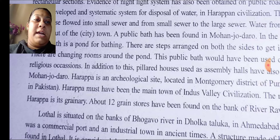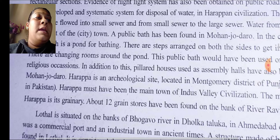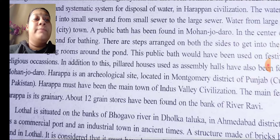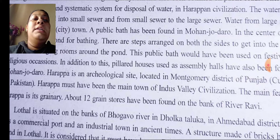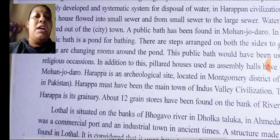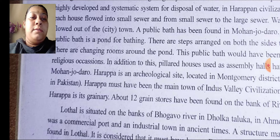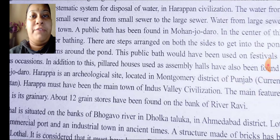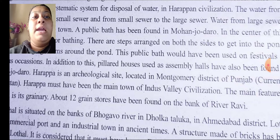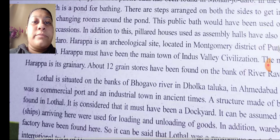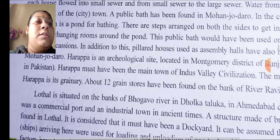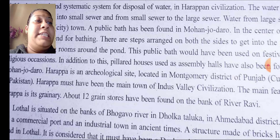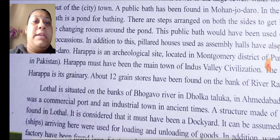Harappa is an archaeological site located in Montogomery district of Punjab, currently in Pakistan. Harappa must have been the main town of Indus Valley civilization — you can underline this. The main feature of Harappa is its granary. About 12 grain stores have been found on the bank of river Ravi.